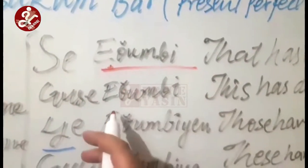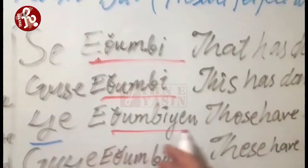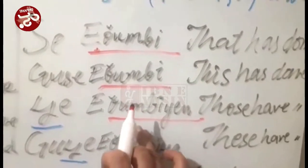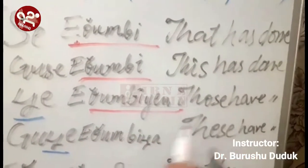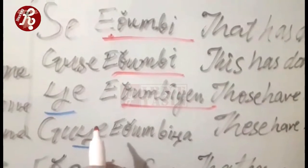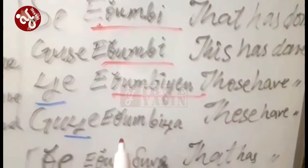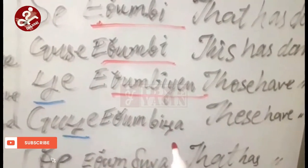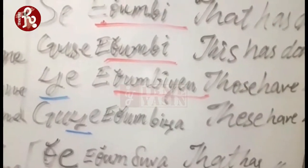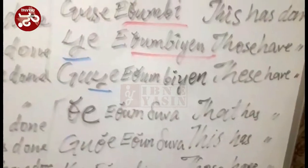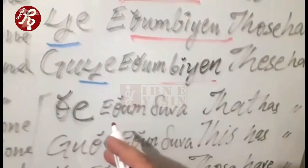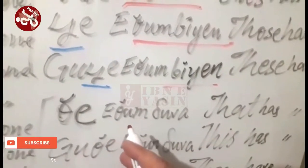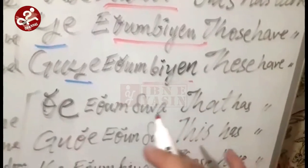'Say' refers to a non-living being or animal, singular, at a distance that has done something. 'Say etumbi' — this has done. For the plural, 'say etumbian' — they have done. I will correct the spelling on screen: 'gucce etumbian' — these have done.